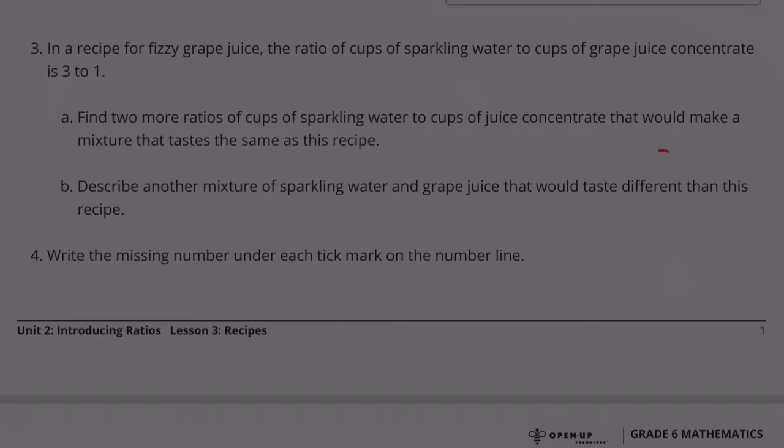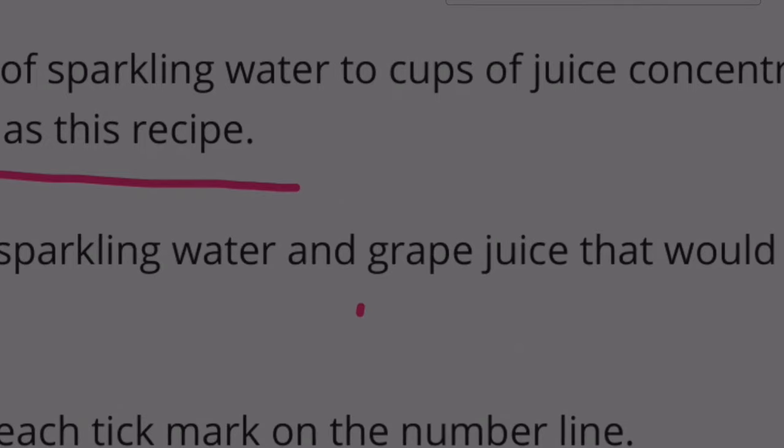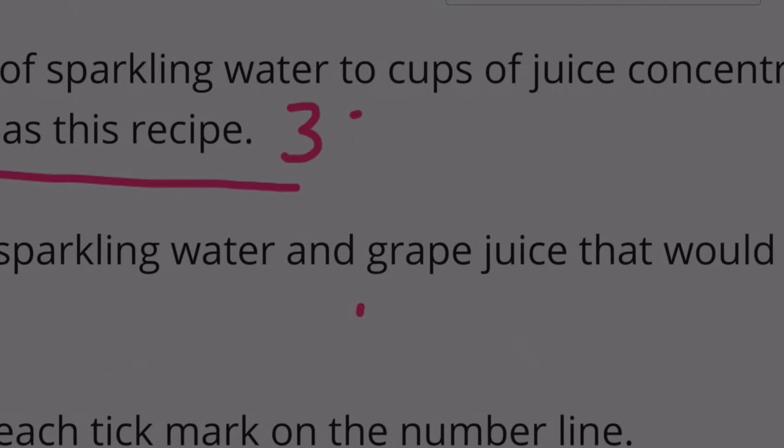Number three: In a recipe for fizzy grape juice, the ratio of cups of sparkling water to cups of grape juice concentrate is three to one. Part A: Find two more ratios of cups of sparkling water to cups of juice concentrate that would make a mixture that tastes the same as this recipe. They gave us a three to one ratio, so no matter what we do, we have to keep that same ratio because they want this to taste the same.